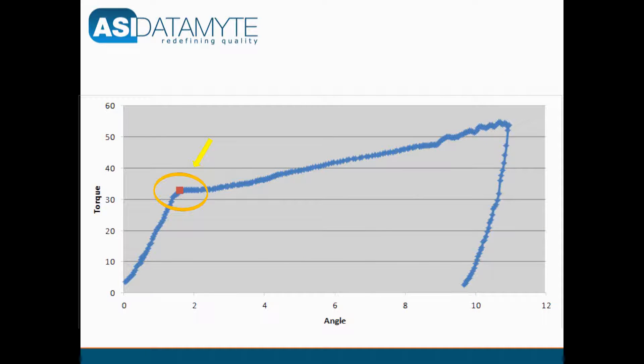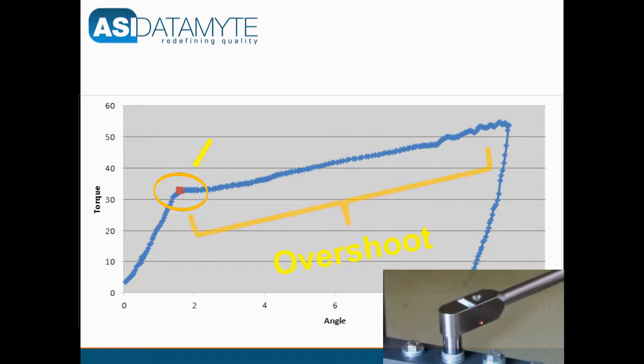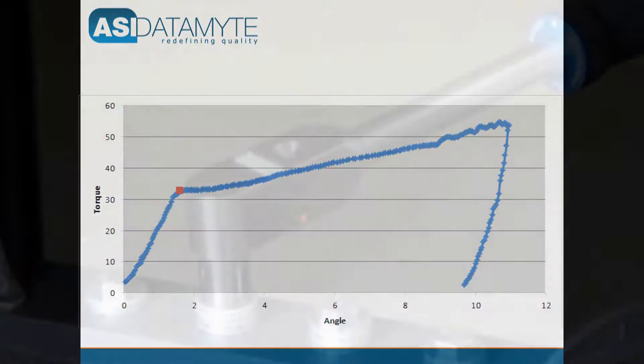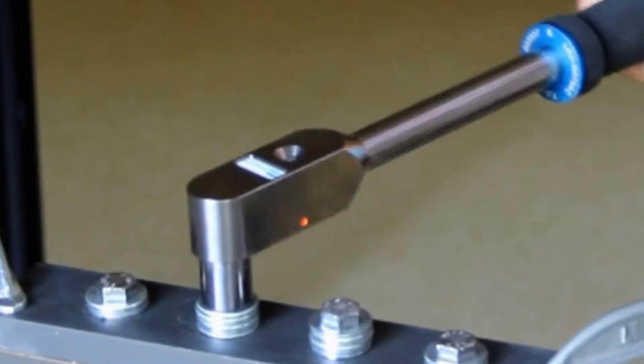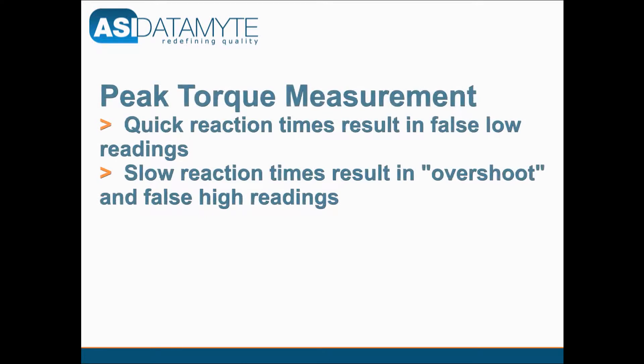Capturing the residual torque measurement at the start of fastener retightening rotation eliminates false high readings due to overshoot and eliminates false low readings due to premature wrench release. These two error conditions are common problems with peak measurement systems.